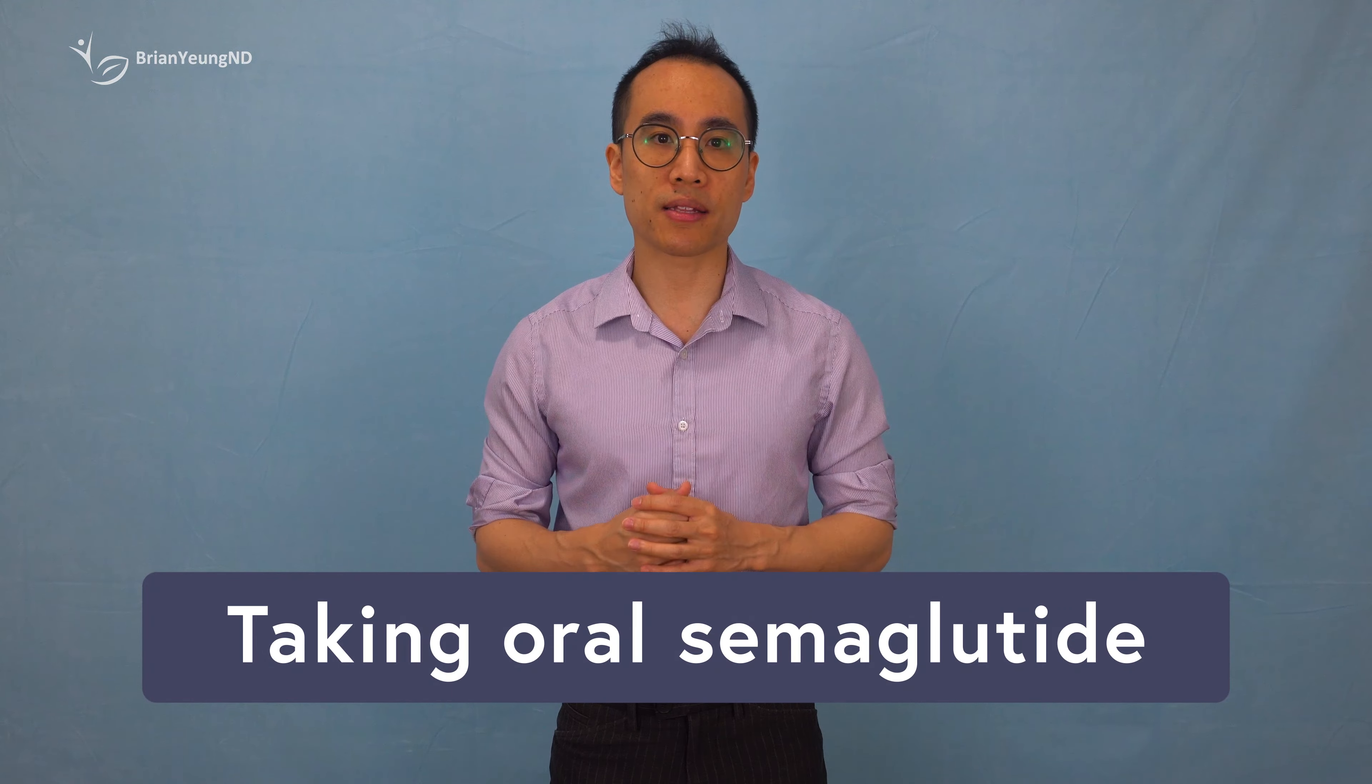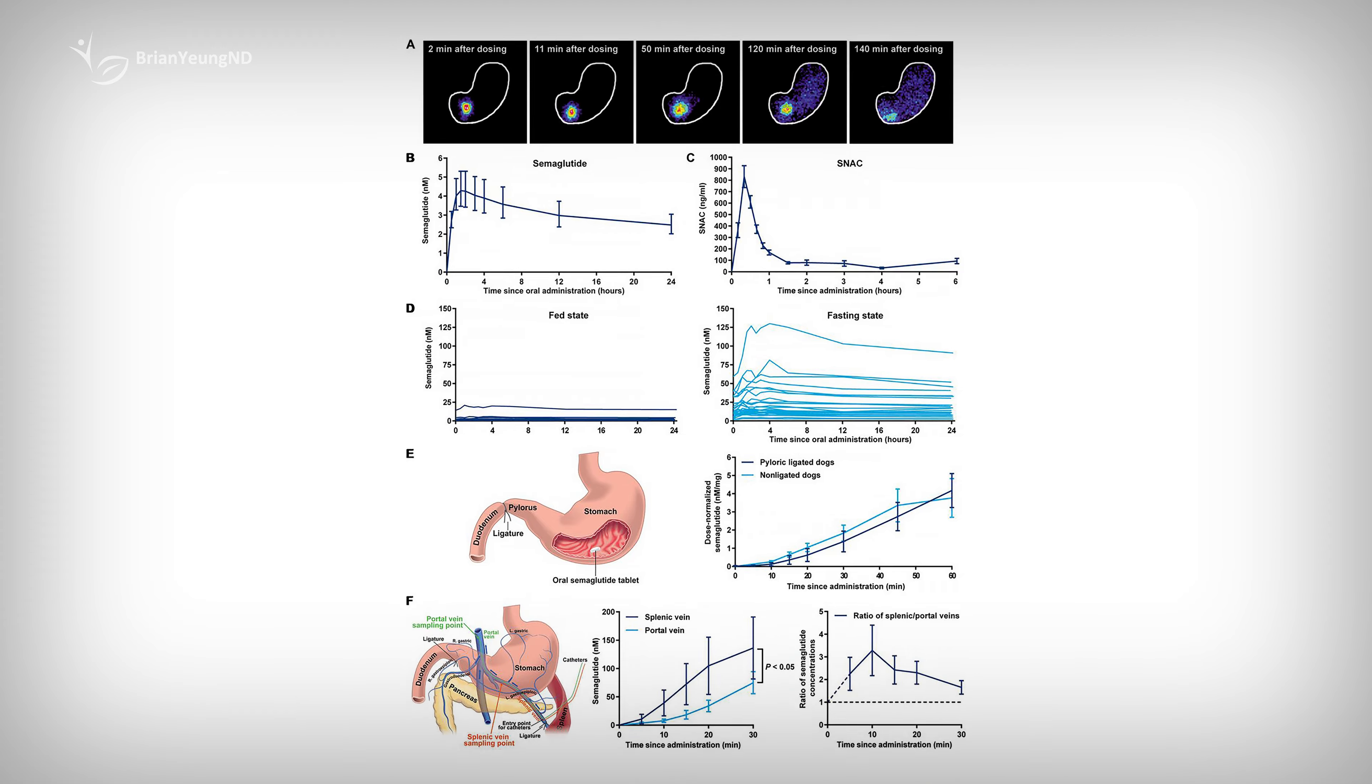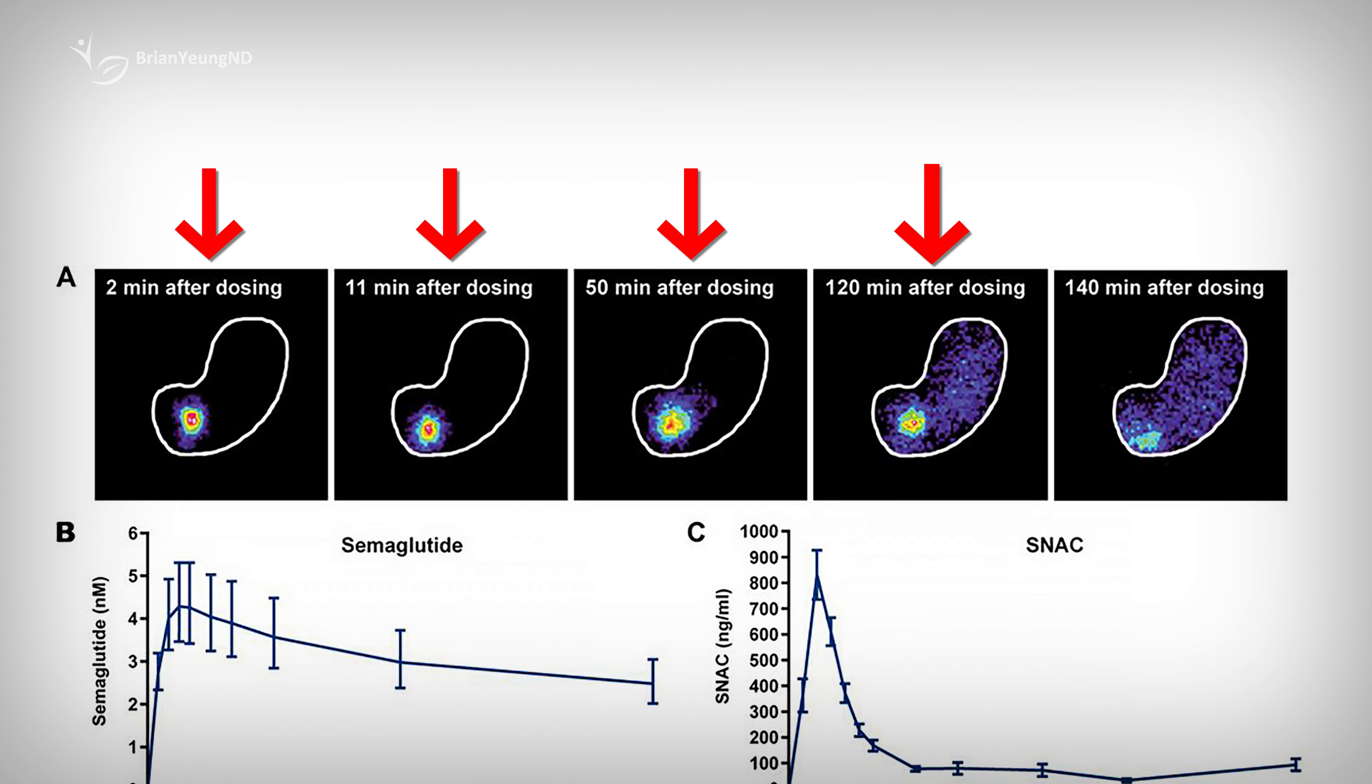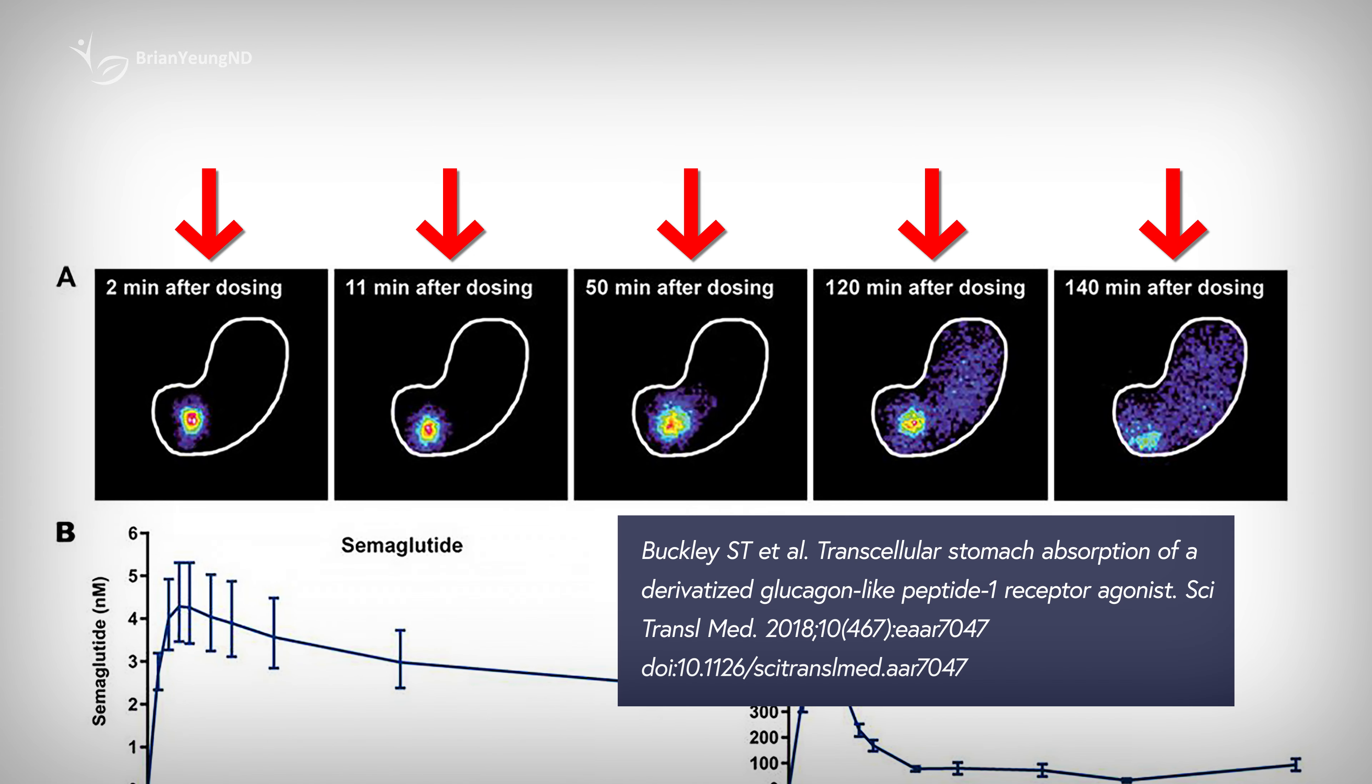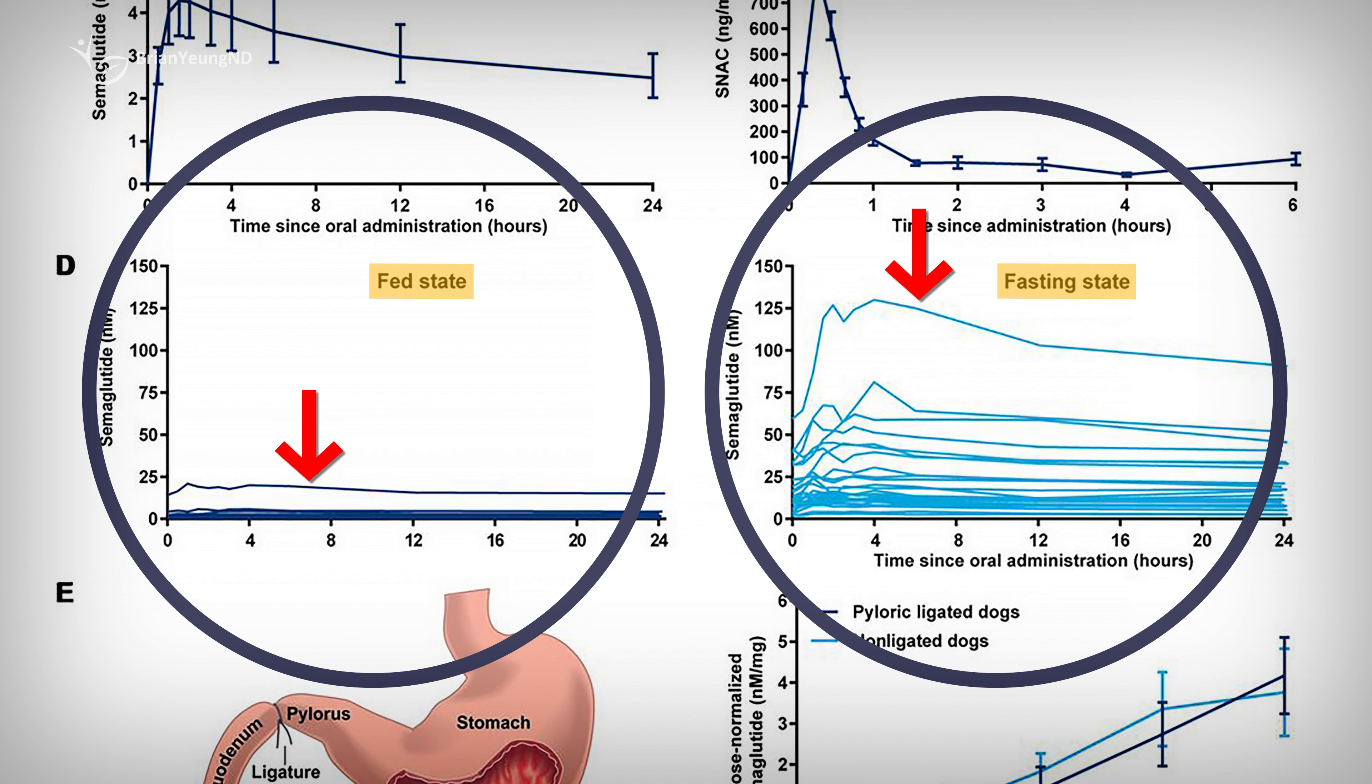Taking oral semaglutide on an empty stomach is probably the most important. When you take the pill, it disperses in your stomach, which is where it's primarily absorbed into the bloodstream. Studies show that if you take oral semaglutide with food, it essentially isn't absorbed at all and barely shows up in your blood. However, when taken on an empty stomach, semaglutide is absorbed effectively. So taking oral semaglutide before you've eaten anything, for example first thing in the morning, is essential. If you take it with food, it might not work at all.